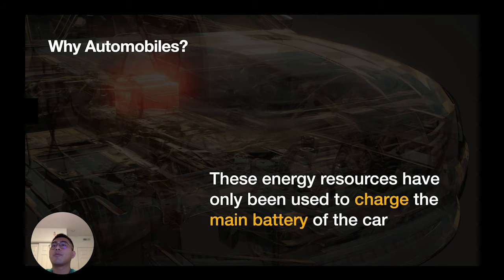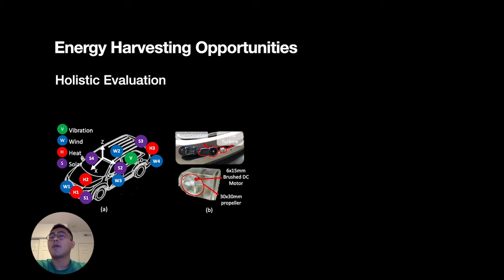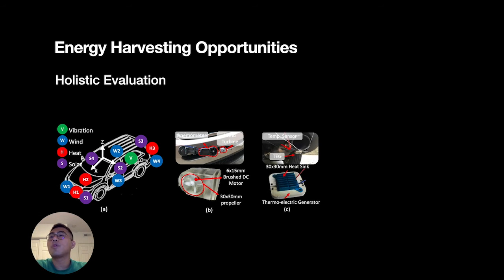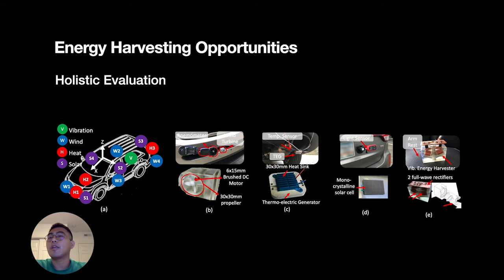The main focus of energy harvesting in automobiles has been recharging the main batteries. So we conducted a holistic evaluation of possible energy harvesting technologies in and around automobiles. For wind energy, we developed a small-scale wind turbine and attached an anemometer to four different places: front and rear bumpers, side doors, and the roof. We also tested off-the-shelf thermoelectric energy generators with temperature sensors to examine how much heat energy is available. For solar energy, we attached solar cells with light sensors to four different locations and measured solar energy in daytime and nighttime. Lastly, we developed inch-scale vibration energy harvesters and attached them to our test car with vibration sensors. In summary, we have four energy harvesters and four energy monitors, so we can convert each energy source to electrical power while measuring how much energy is available at different positions.